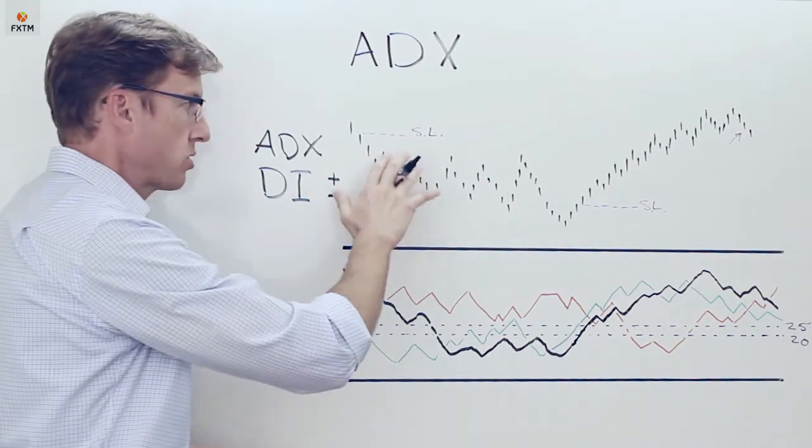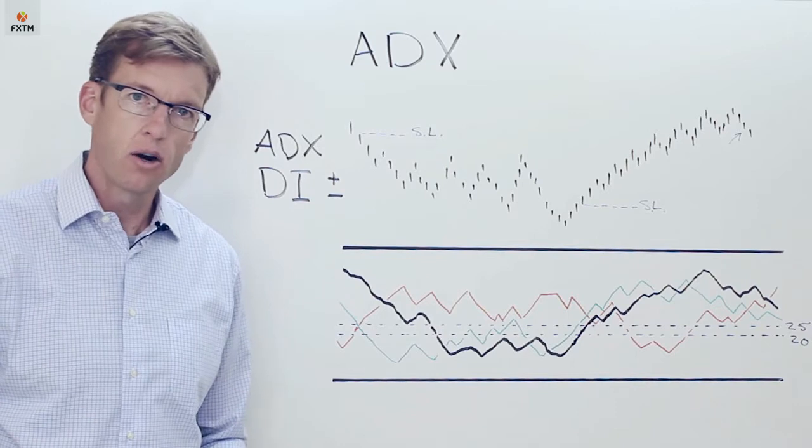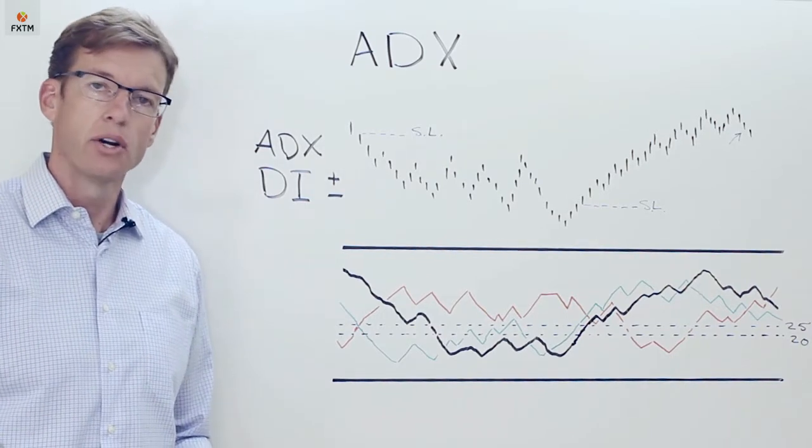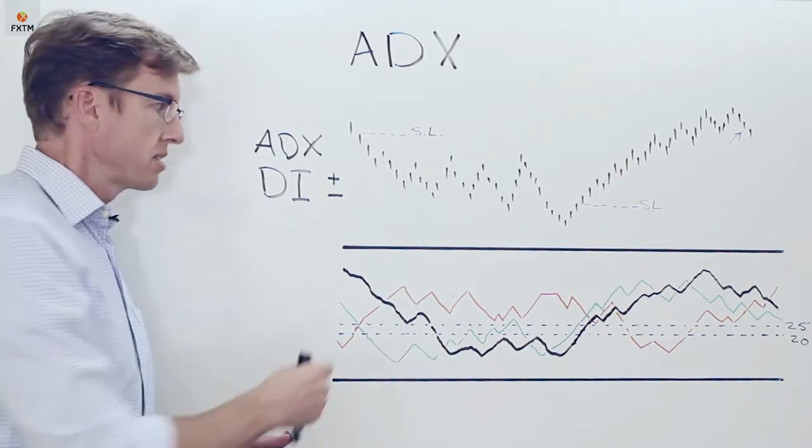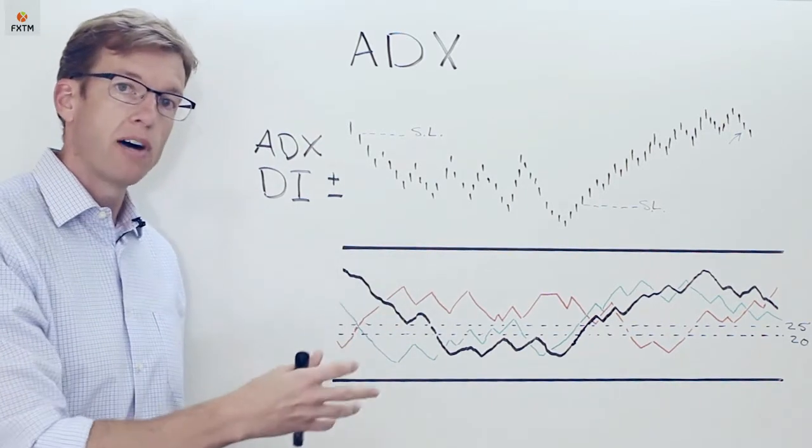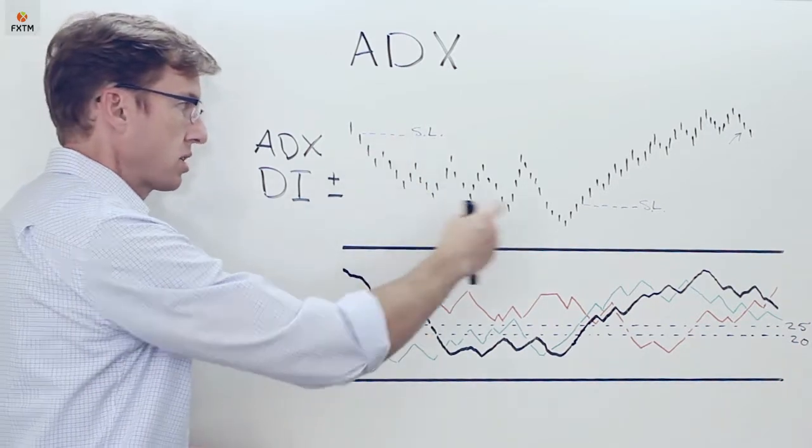Now, obviously, an investor is going to want to trail those stops. And in fact, the parabolic SAR, or stop and reverse indicator, also developed by Wells Wilder, is oftentimes used in combination with the ADX indicator, because it does such a good job of helping to identify where that trailing stop should be placed. But initially, we set it at those extreme points.